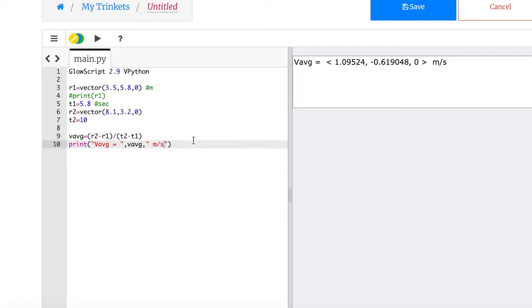And that gave me the answer. There's my average velocity. Okay, but wait, watch this. Print mag of v average equals, I can actually calculate the magnitude of the average velocity. There's a built-in function called mag, and if you put a vector in there it will return the magnitude of the average velocity.